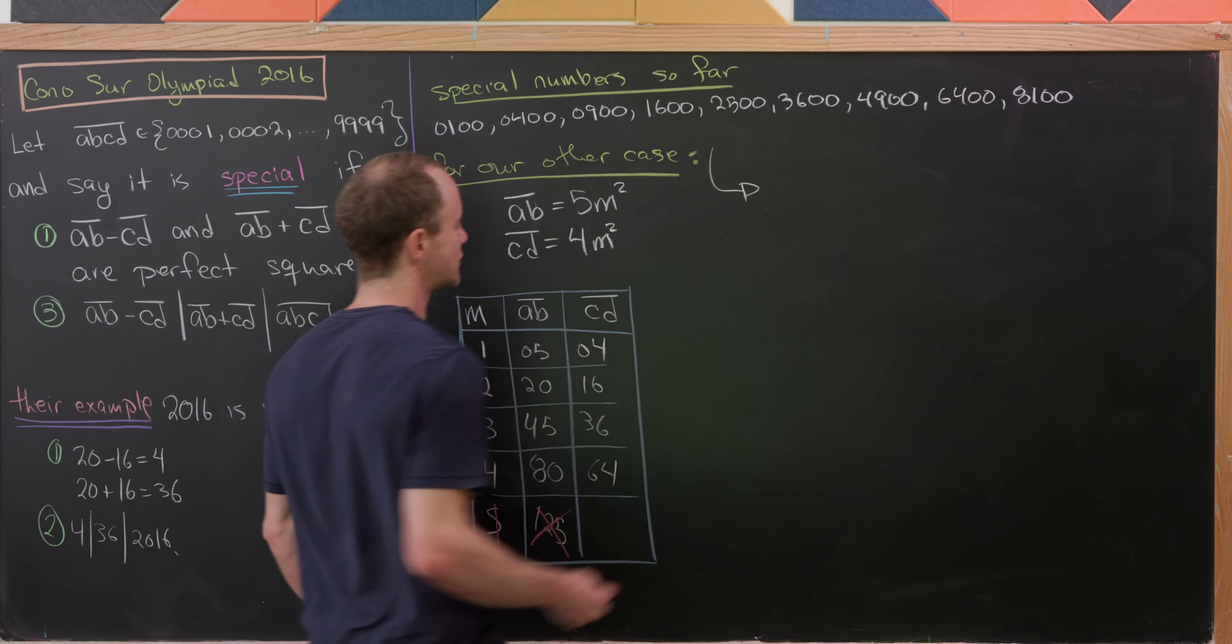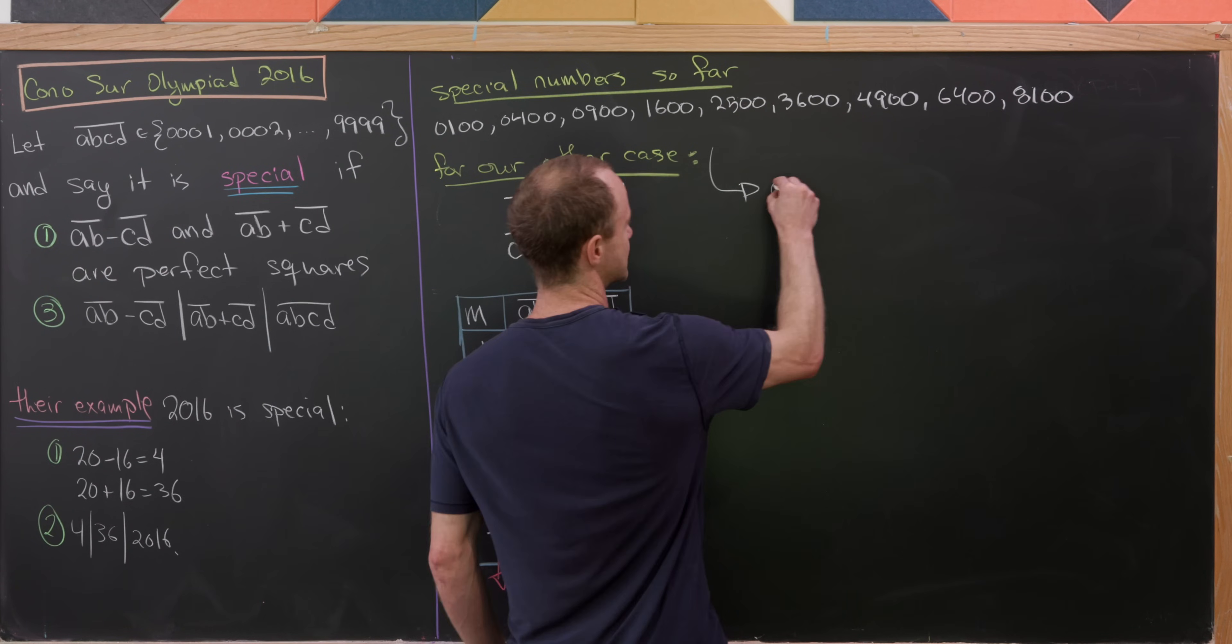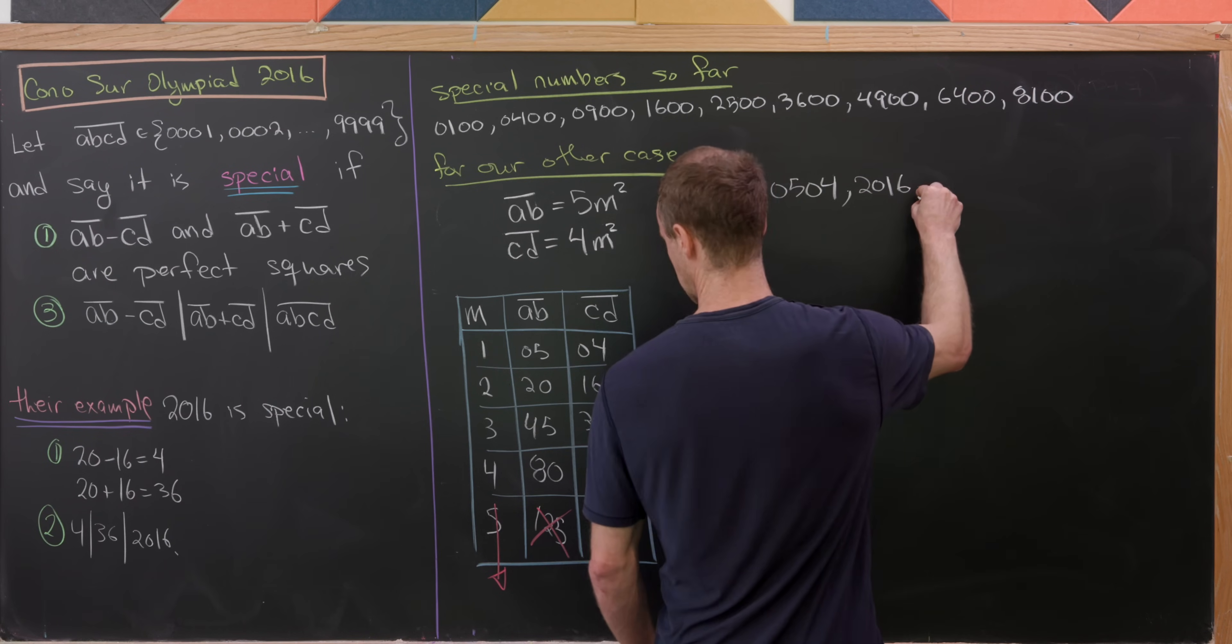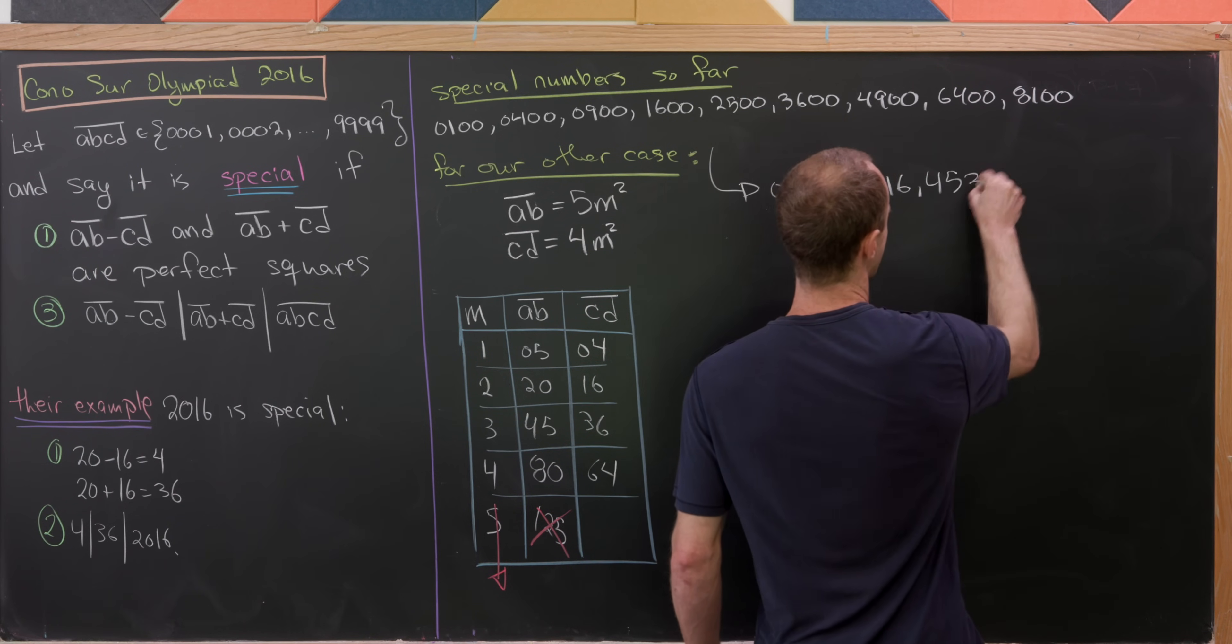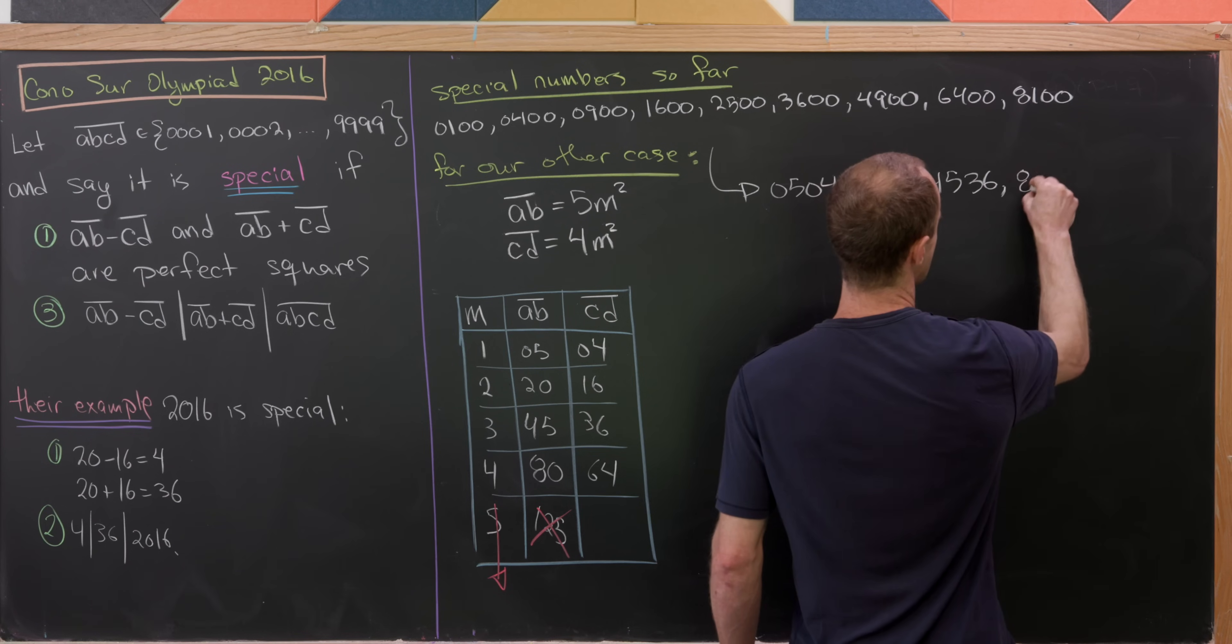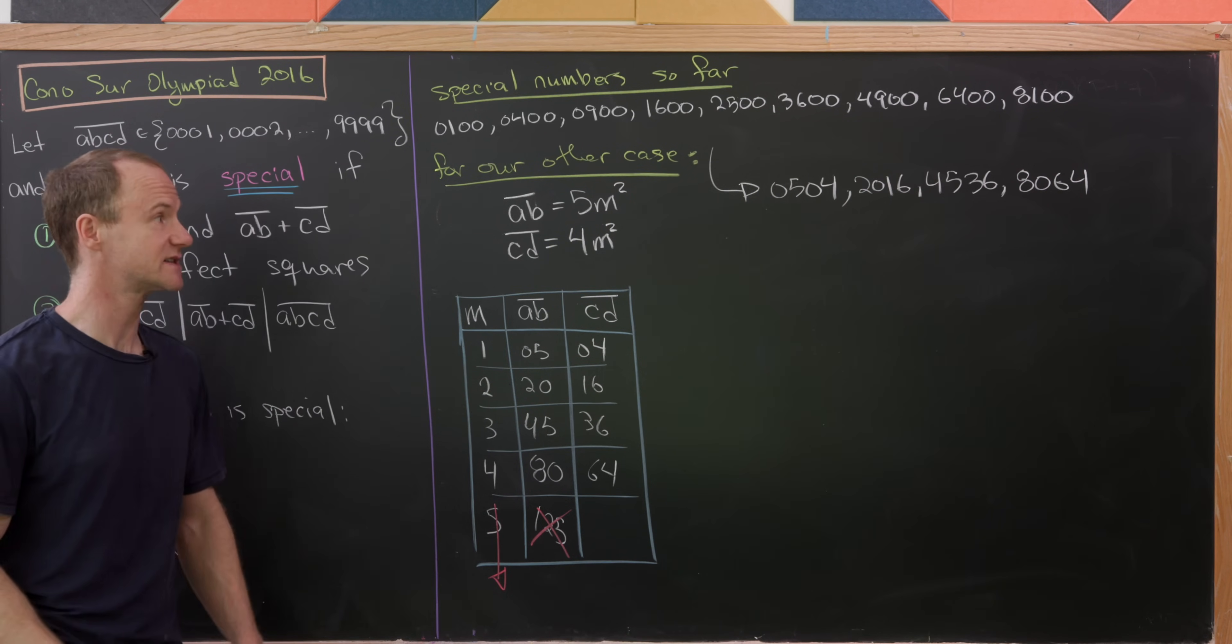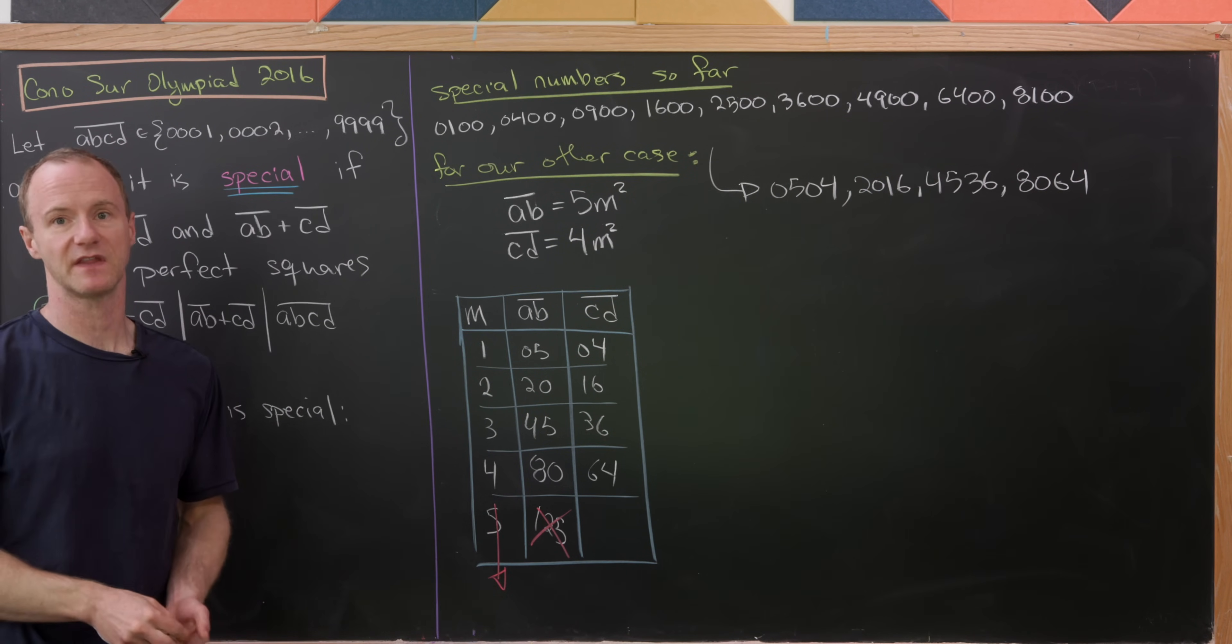We can add those to our list: 0504, 2016, 4536, and 8064. That's a complete list of special numbers, and that's a good place to stop.